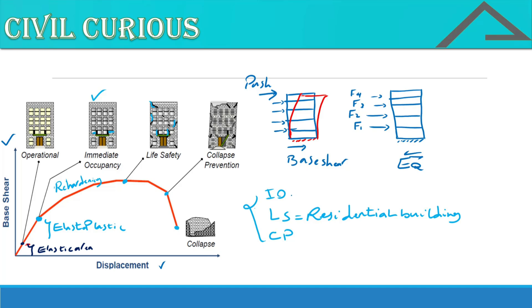And here Immediate Occupancy is used for hospital or other buildings that the employer wants us to design that for IO, because of personal reasons.